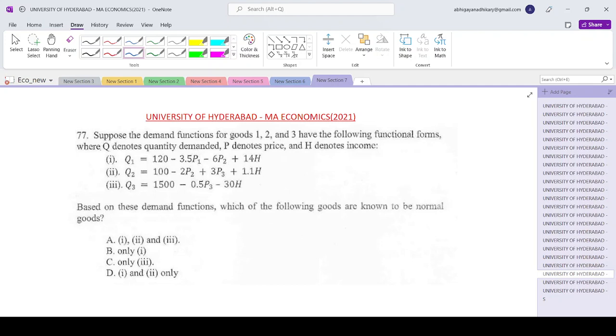And we are now trying to work out question number 77. So suppose the demand functions for goods 1, 2 and 3 have the following functional forms where Q denotes the quantity demanded, P denotes the price and H denotes the income. So we have three equations, we will explore them shortly.